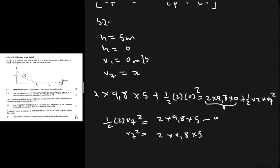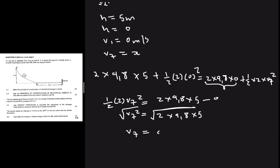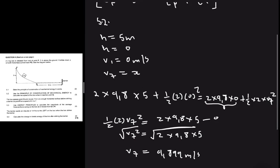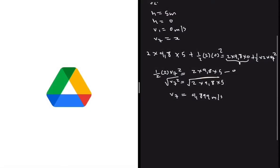We take the square root on both sides: vf equals the square root of 2 multiplied by 9.8 multiplied by 5. Putting that into the calculator — 2 times 9.8 times 5, then taking the square root — gives us approximately 9.899 meters per second. That's how you determine vf at point Q using conservation of mechanical energy.